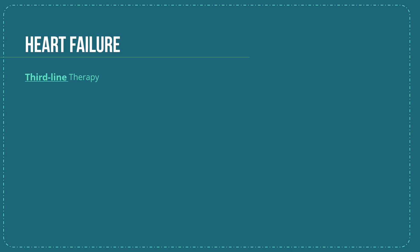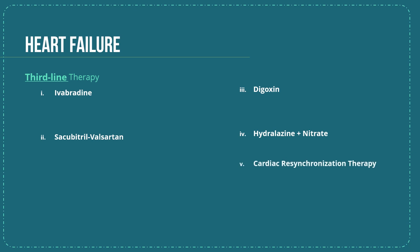Third-line treatment options include ivabradine, sacubitril-valsartan, digoxin, hydralazine in combination with nitrate, and cardiac resynchronization therapy. For ivabradine, criteria include sinus rhythm greater than 75 beats per minute and a left ventricular ejection fraction less than 35 per cent.